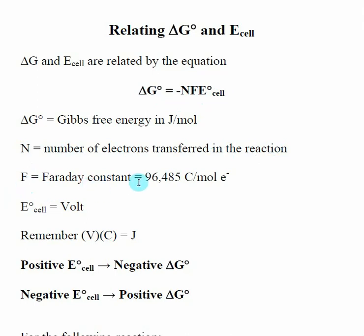So F is Faraday's constant. It's just a constant. And then E naught cell is once again in volts. So it's a little hidden inside of here. But you got to remember if I multiply volts times Coulombs, I get joules. So this is why my Gibbs free energy needs to be in joules per mole. So typically they give you delta G's in kilojoules per mole. I got to convert it to joules per mole.